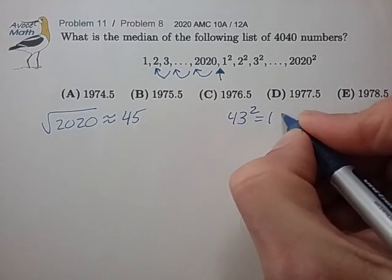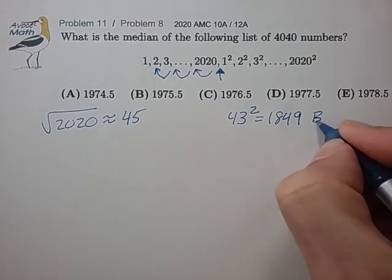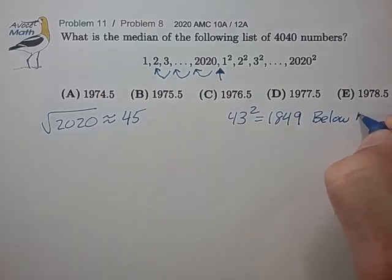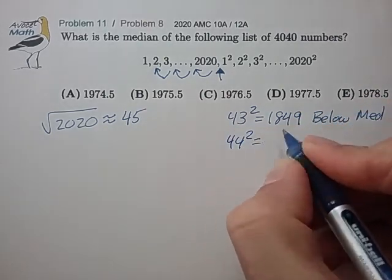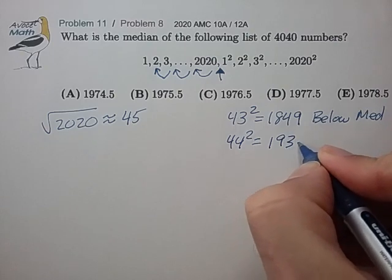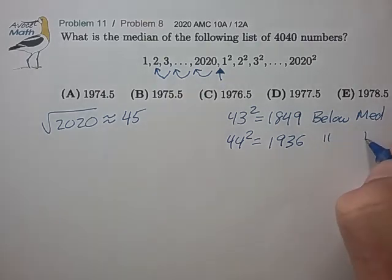So 43 squared, if you work that out, 1849. So we know that's going to be below the median. 44 squared, if you work that out, 1936. That's enough jumps below that that's also going to be below the median.